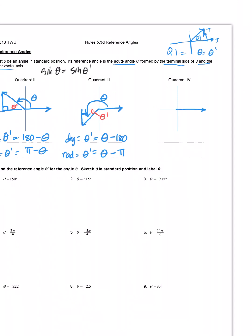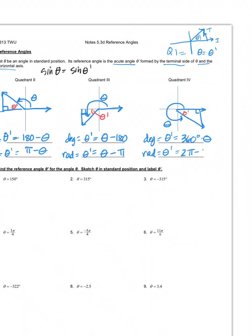What about quadrant four, where theta creates an angle down here? Theta prime is the acute angle inside that right triangle. The angle is greater than 270 but less than 360. If I subtracted theta from 360, I'd be left with the acute angle. So in degrees for quadrant four, theta prime equals 360 degrees minus theta. In radians, that's 2 pi minus theta.